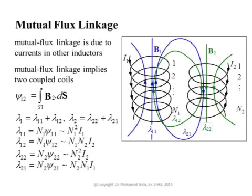If you want to calculate the flux in the first circuit due to the magnetic field of the second circuit, what we have to do is integrate over the cross section of the first circuit, which is S1, the magnetic field B2·ds. We call this Ψ12. Ψ12 is the flux in the first circuit due to the current of the second circuit — the integral over the first circuit.